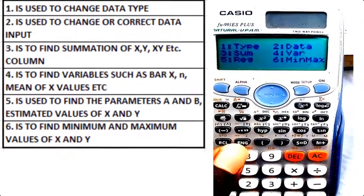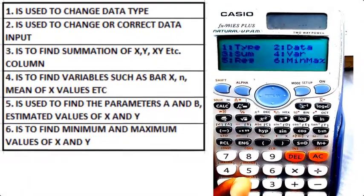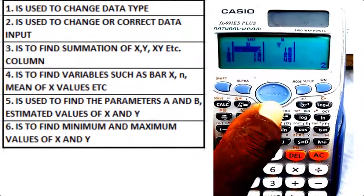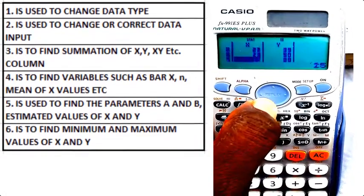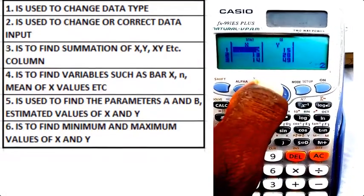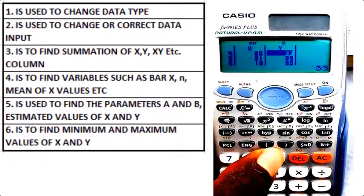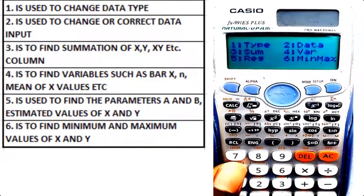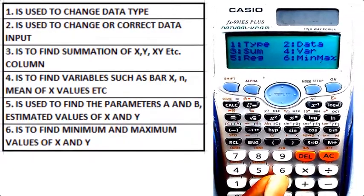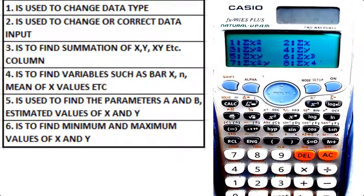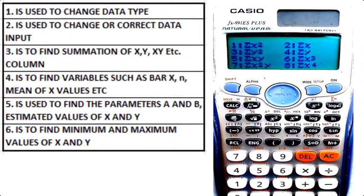Let me go back. So I have the type. 2 is used to change data. If I want to alter anything or probably I made a mistake by inputting those data, so I can easily make changes to them. So now 3 stands for sum.